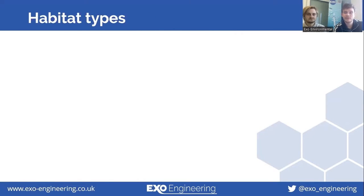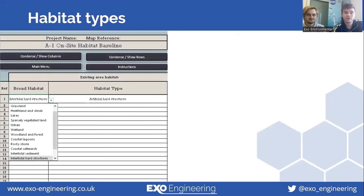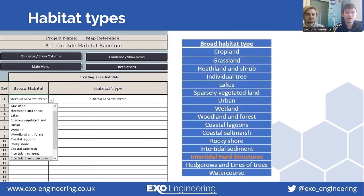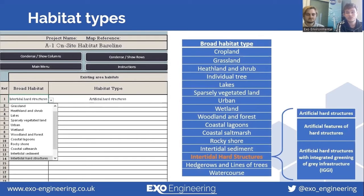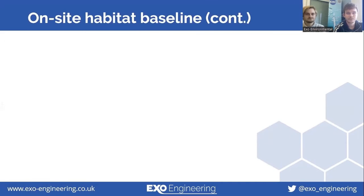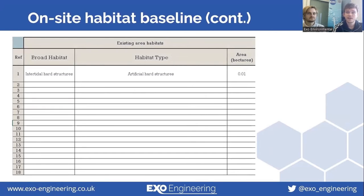We're now going to input the data of our seawall replacement into the metric. The first thing we must input is the broad habitat type which is being impacted — in this case it's the intertidal hard structures. Within this category there are three subcategories: artificial hard structures, artificial features of hard structures, and artificial hard structures with integrated greening of grey infrastructure, which I will now refer to as artificial hard structures with IGGI. A conventional seawall falls under artificial hard structures, and 100 square metres corresponds to 0.01 hectares, so we've inputted this value.